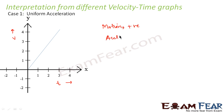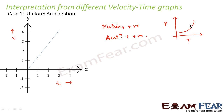It also says that the acceleration is positive. Now if we want to plot the position-time graph corresponding to the same, since the velocity is increasing with time, the position-time graph would be a non-uniform curve. If the position-time curve were a straight line, that would mean velocity is constant. But here velocity is increasing, so the position-time graph would be a non-uniform increasing curve where the increase in position with time is non-uniform.